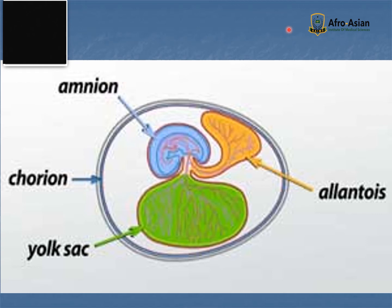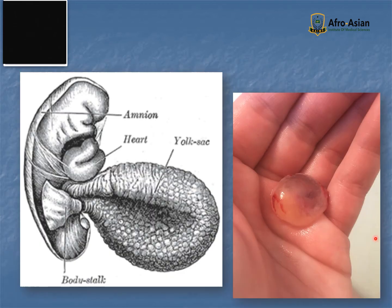The yolk sac is the extra-embryonic membrane that surrounds the egg yolk. Here you can see the yolk sac, the embryonic heart, and the amnion. Another question arises: can there be a yolk sac and no baby?